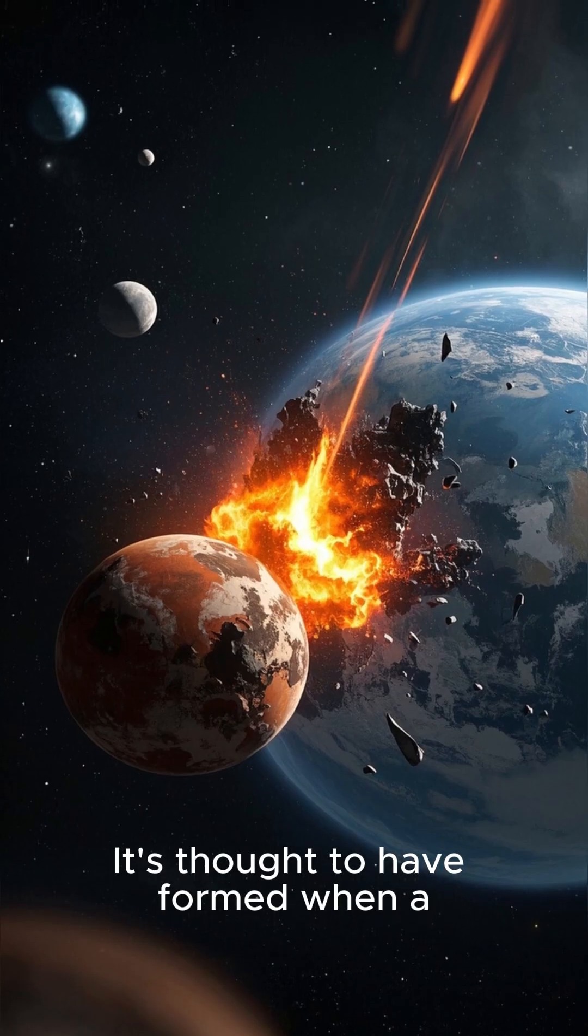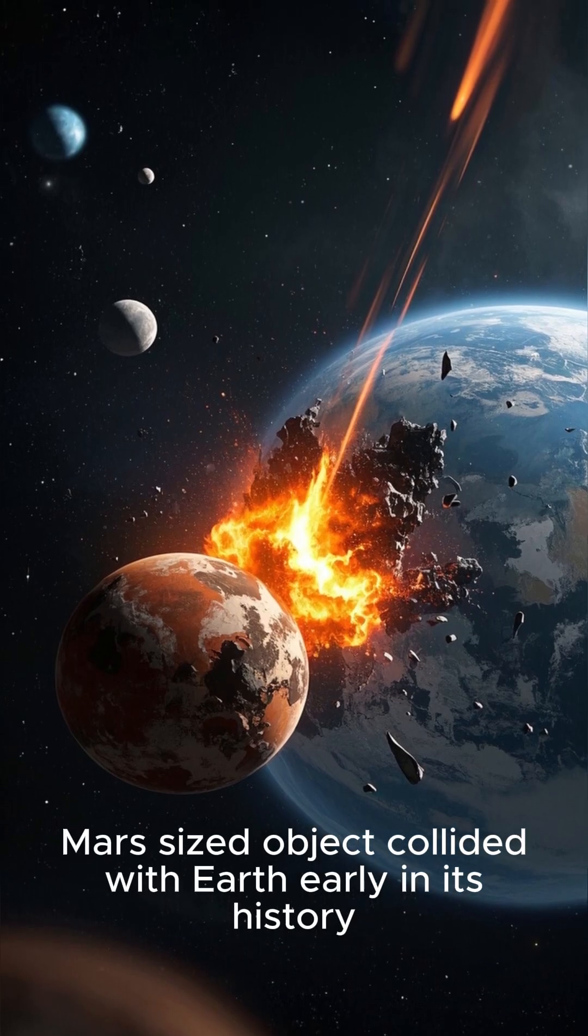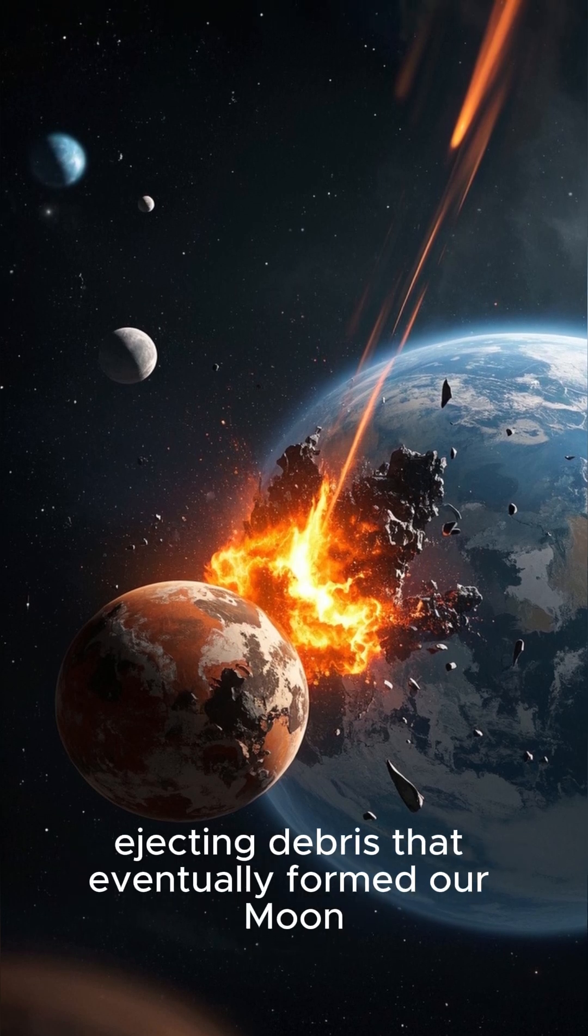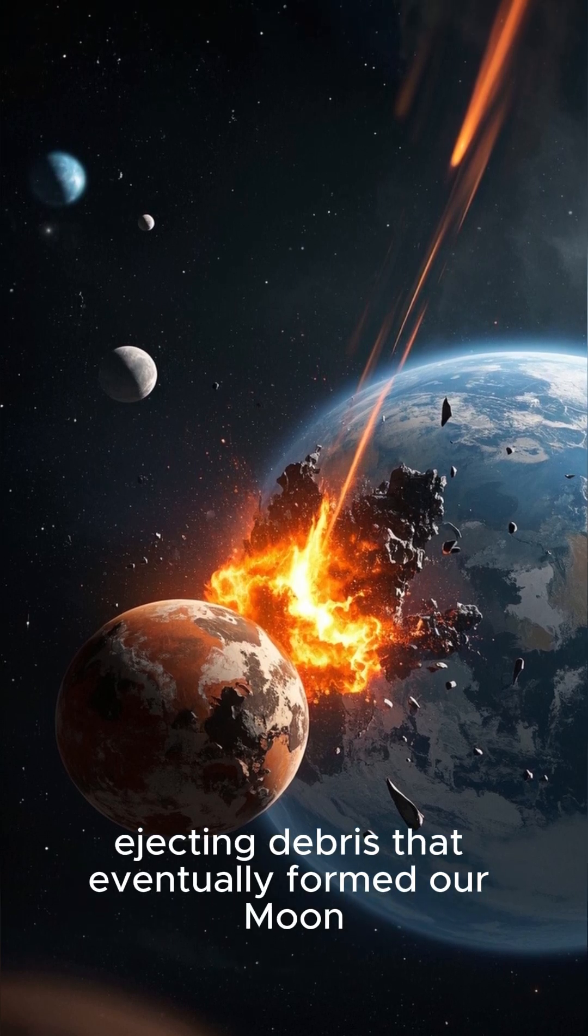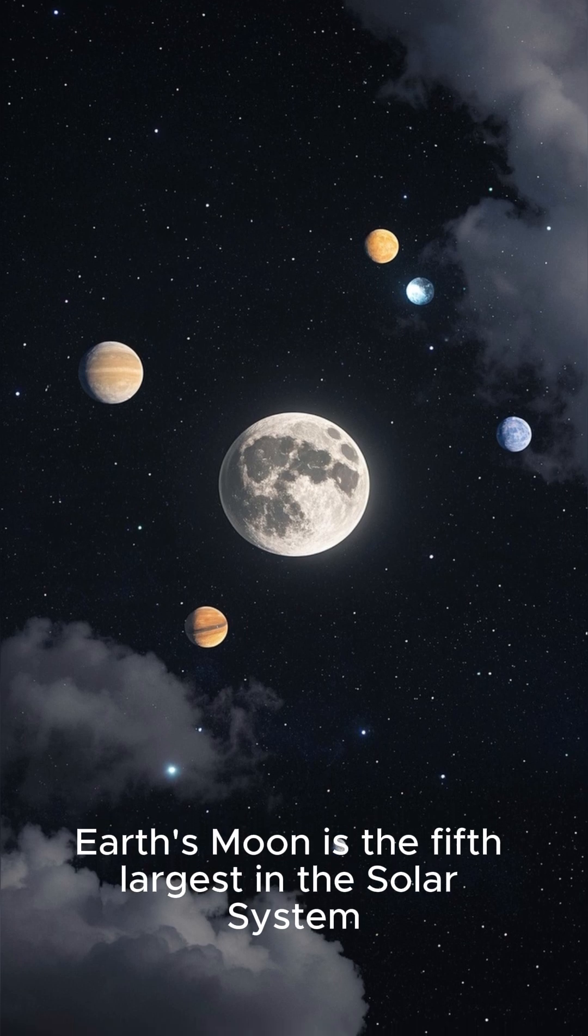Earth. It's thought to have formed when a Mars-sized object collided with Earth early in its history, ejecting debris that eventually formed our moon. Earth's moon is the fifth largest in the solar system.